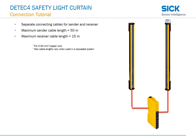The first scenario is separate connecting cables for the sender and receiver. In this scenario, the maximum sender cable length is 50 meters, while the maximum receiver cable length is 15 meters. This is for a cross-sectional wire area of 0.34 millimeters squared. Also, maximum cable length will vary in cascaded systems, which I'll show in further slides.